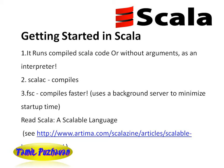We will start with Scala. It runs compiled Scala code without arguments as an interpreter. So where do we run Scala code? There is no argument needed — there is an interpreter. Using the Scala compiler, if you use a compiler then we compile, and this compiler is faster — about 10% faster.